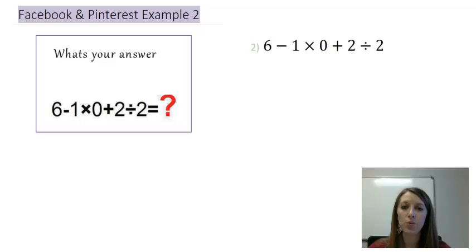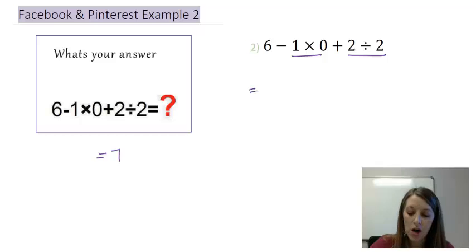Example 2, again, if you need to redo this problem doing PEMDAS, now would be the perfect time to do so. The correct answer to this problem is 7, and again, I'll walk through that very quickly. There's no parentheses, there's no exponents here, so I can move to multiplication and division. Those are isolated from each other, so I can work them at the exact same time. So I have 6 minus 1 times 0, anything times 0 is 0, plus 2 divided by 2, which gives me 1.